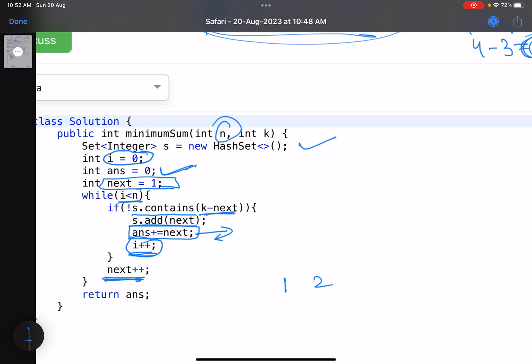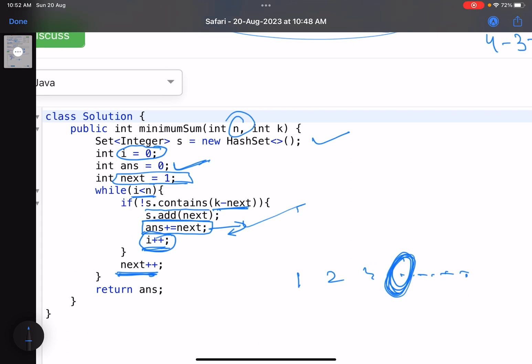At every step you just do next, next, because first you try 1, then 2, then 3, irrespective of whether you insert the value or not. You actually have to move to the next value. If you insert it, well and good, or else try the next value, and finally return the answer.